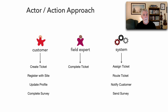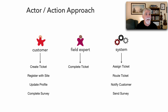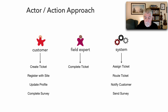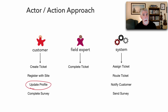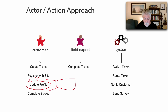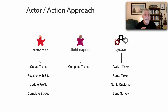Now that we've identified the actors and some of the major things those actors do, we can start identifying components. Like the workflow approach, each action that an actor can take will not necessarily always produce a new logical component. We may have multiple actions handled by a single component. For example, 'update profile' and 'create profile' might both be handled by the same component — so it's not necessarily a one-to-one mapping.